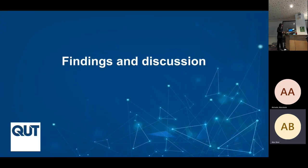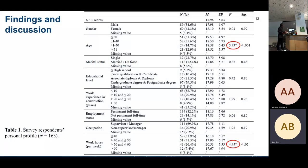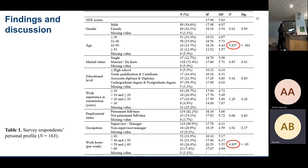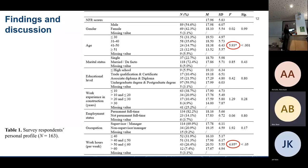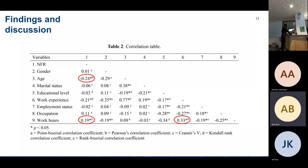Now let's review the findings. This table summarizes the demographic analysis and one-way ANOVA results. Only the differences in need for recovery for the age group and work hours group showed statistical significance. Looking at the age group, the mean scores show that need for recovery decreased with age. This negative relationship was also confirmed by the correlation analysis, showing a negative association between age and need for recovery.